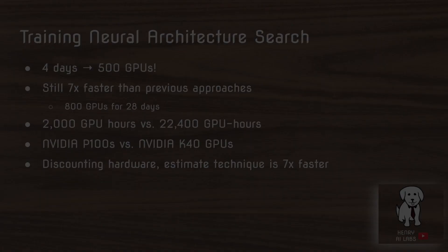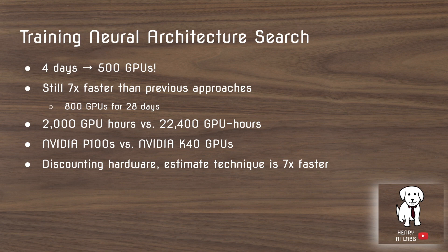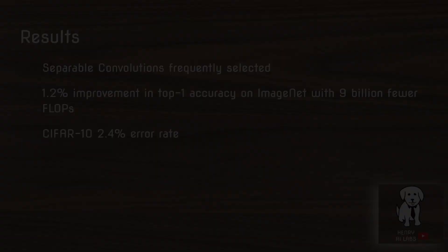One key takeaway from the paper is the computational cost: it takes four days on 500 GPUs to train this method, yet it is still seven times faster than previous approaches. The previous approach required 800 GPUs for 28 days, accounting for 22,000 GPU hours. The GPUs used in this paper are also significantly better, but the technique is estimated to be approximately seven times faster than prior neural architecture search algorithms.